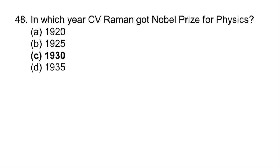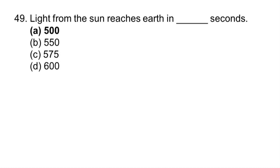In which year CV Raman got nobel prize for physics? 1930. Light from sun reaches earth in 500 seconds.